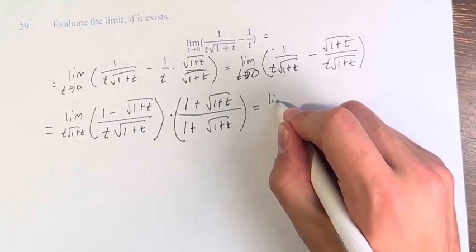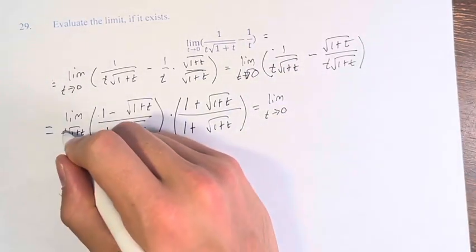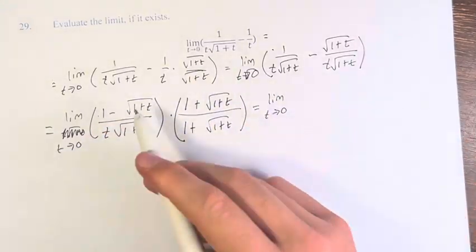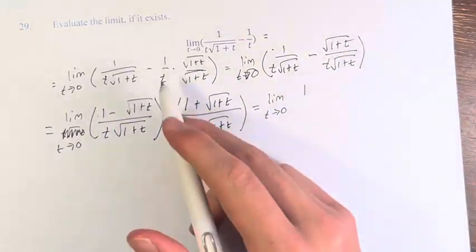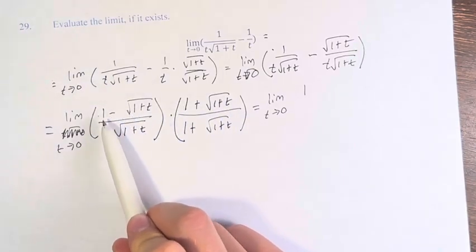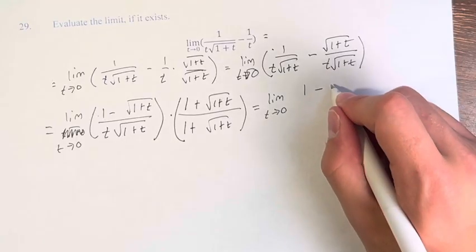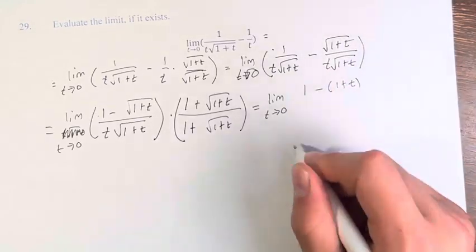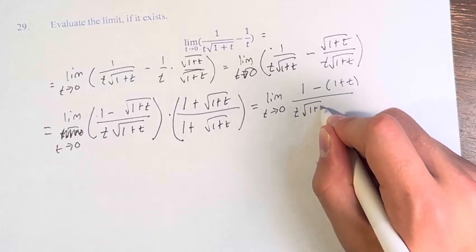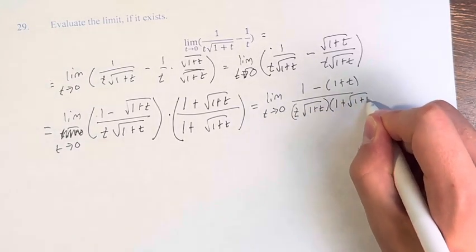On top, we have 1 times 1 plus the square root of 1 plus t, minus the square root of 1 plus t — those cancel — and then minus the square root of 1 plus t squared, which is just 1 plus t, over t times the square root of 1 plus t times 1 plus the square root of 1 plus t.